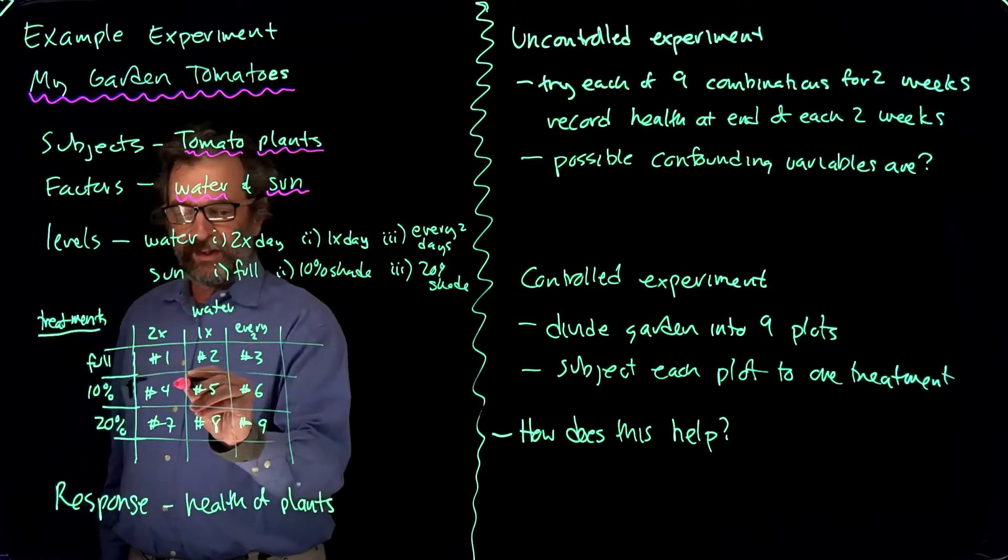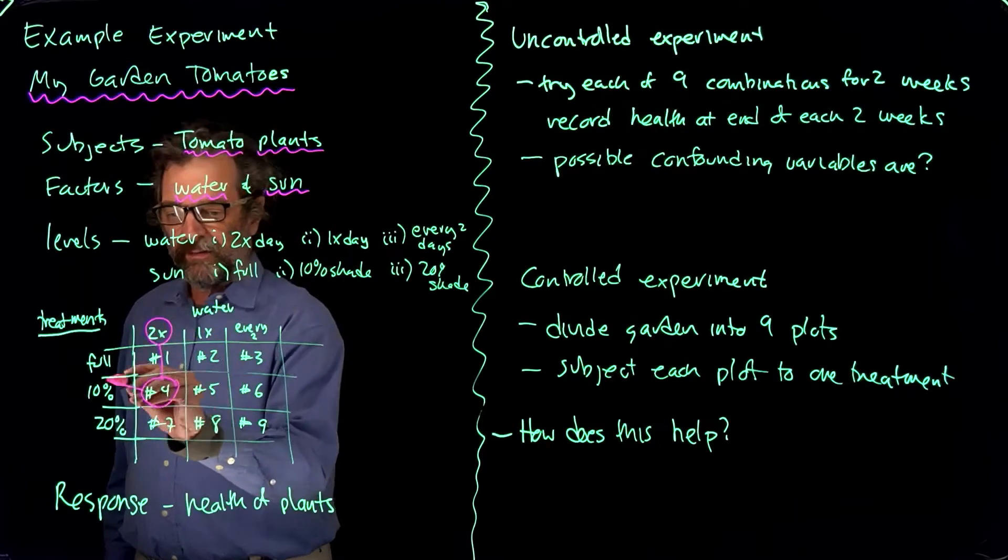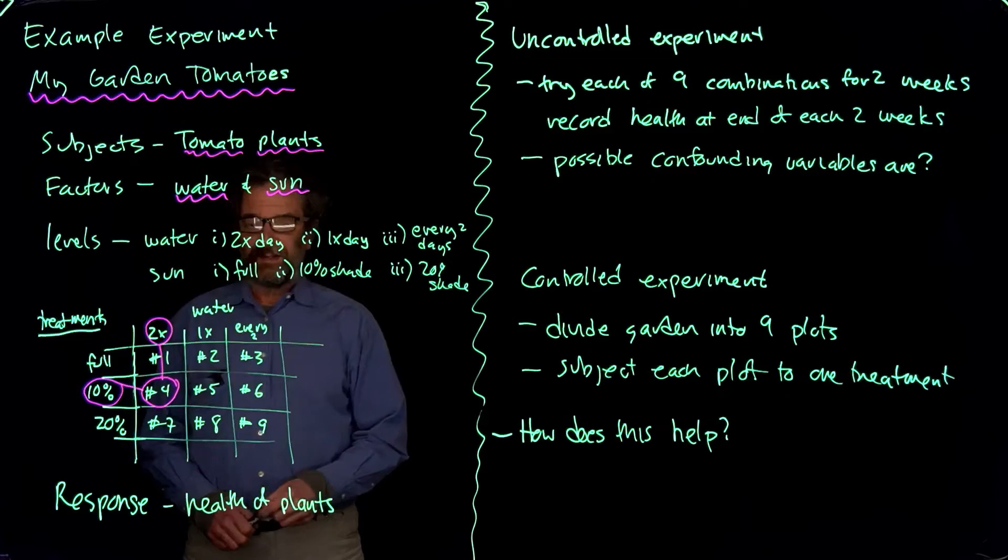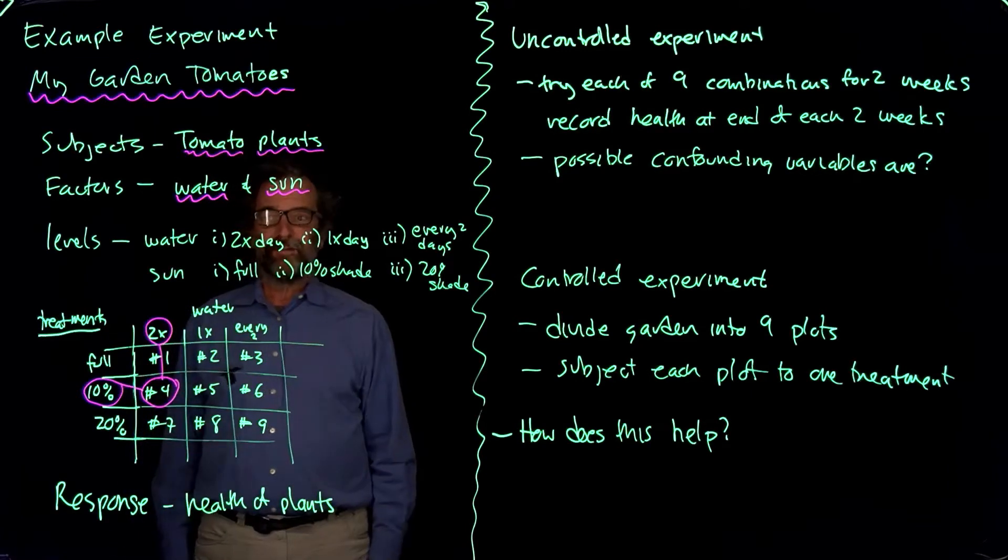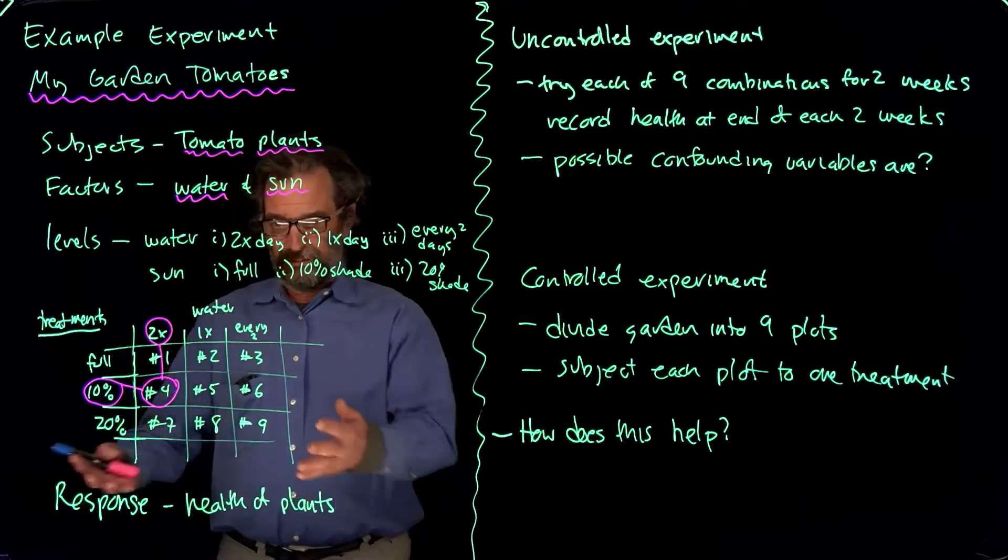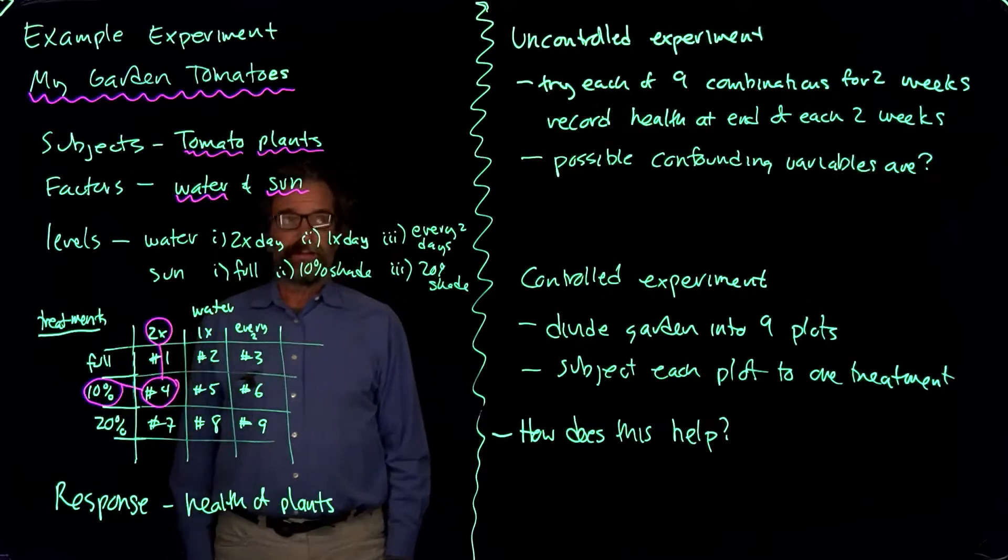Then each of these spots, say here treatment four, can be identified as coming from a watering scheme and a sun scheme. So there's nine possible combinations, three for each. Three times three, it turns out, since it's this square. And then the response variable is going to be the health of the plants.